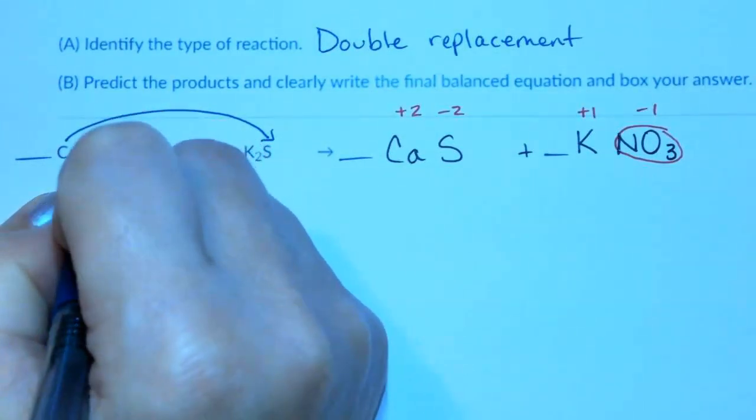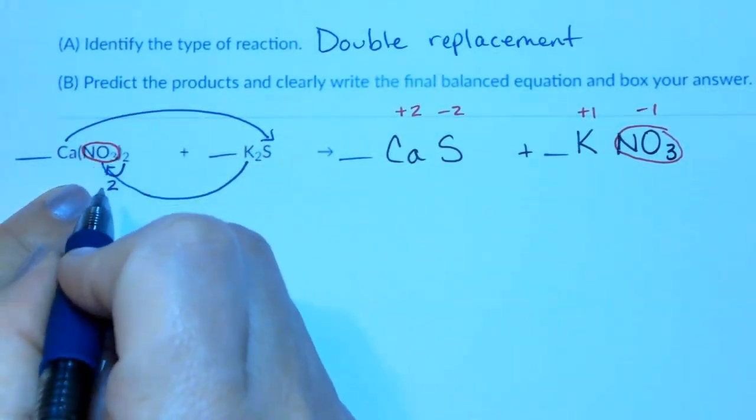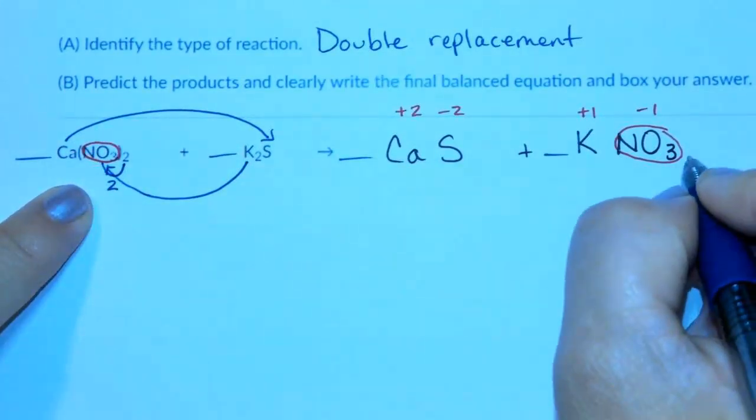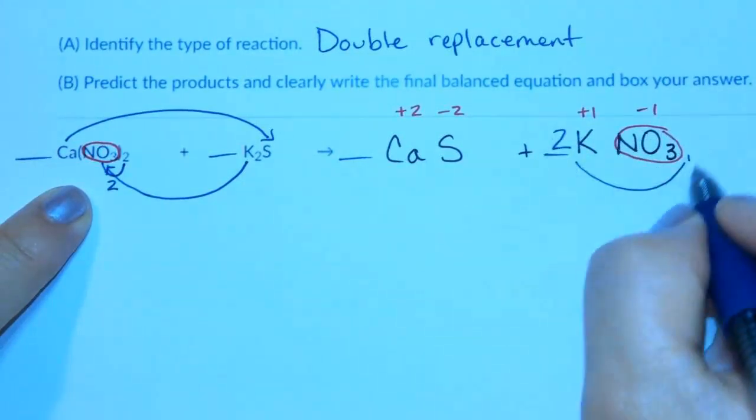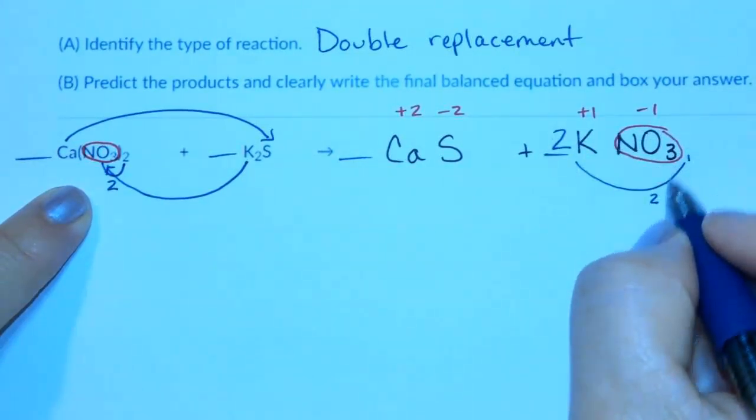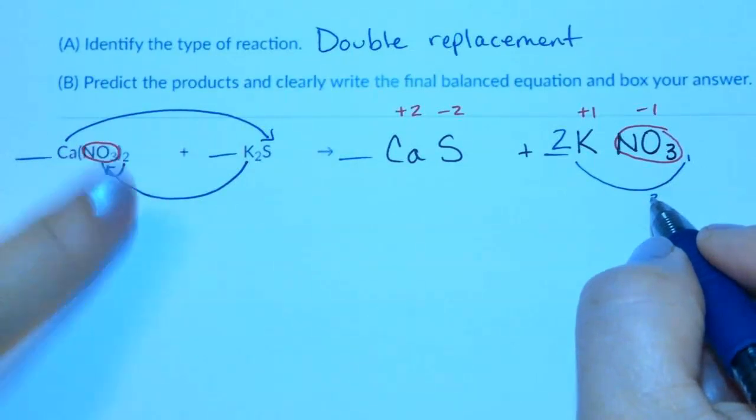We have 2 times 1 is 2 nitrates on this side, but only 1 nitrate on this side. So I'm going to fix it by putting a big 2 in front because 2 times 1 will give me 2 nitrates to balance these 2 nitrates.